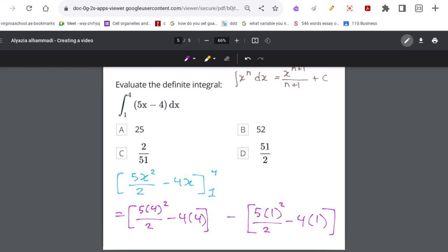After plugging this into the calculator, we will get an answer of 51 over 2. So our correct answer to this task should be D.